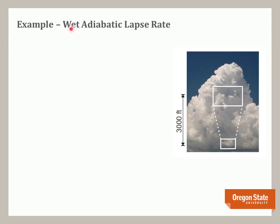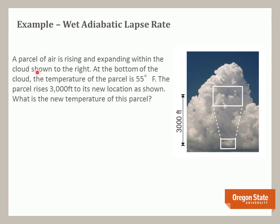Now let's look at an example of the saturated or wet adiabatic lapse rate, illustrated with a picture of a cloud, because it pertains to when we get cloud formation. A parcel of air is rising and expanding within the cloud shown. At the bottom of the cloud, the temperature of the air parcel is 55 degrees. The parcel rises 3,000 feet to its new location. Note also that the volume is increasing, so the temperature is going down. What is the new temperature of this parcel?